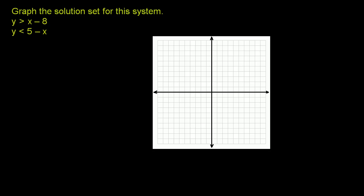So let's graph this first one: y is greater than x minus 8. The way to think about this is to consider y equals x minus 8, but we're going to be greater than that. So we're going to draw a dotted line at y equals x minus 8. If you think about x minus 8, the y-intercept is negative 8.